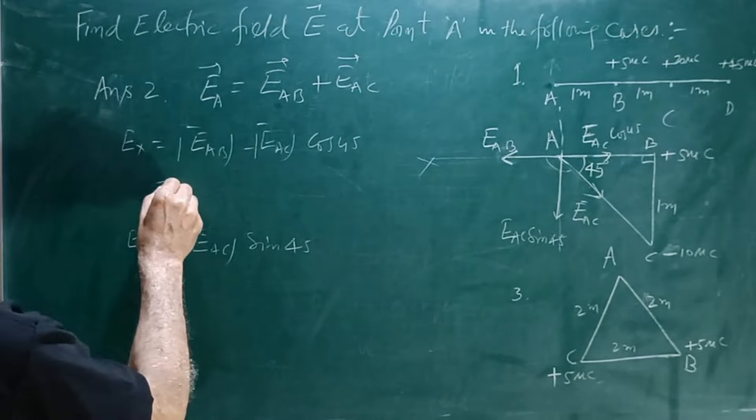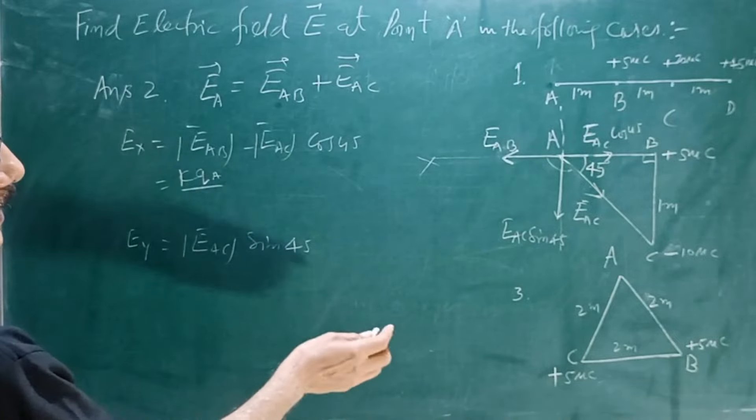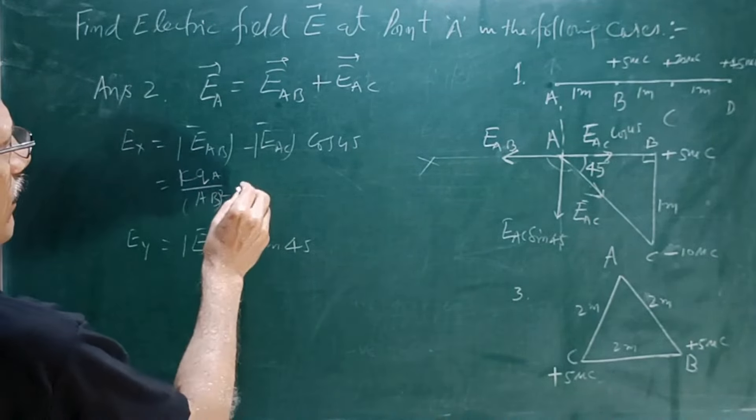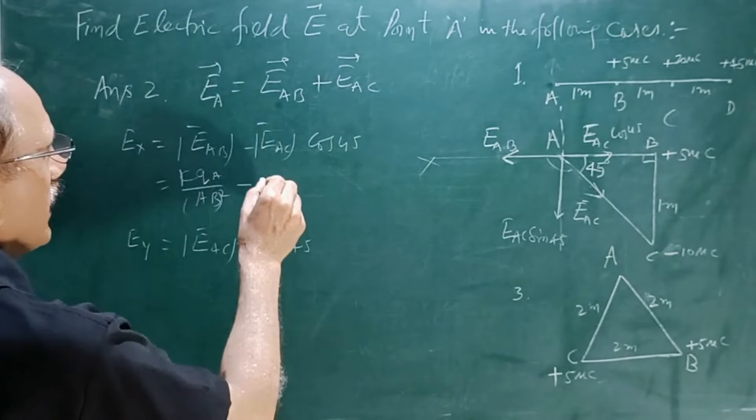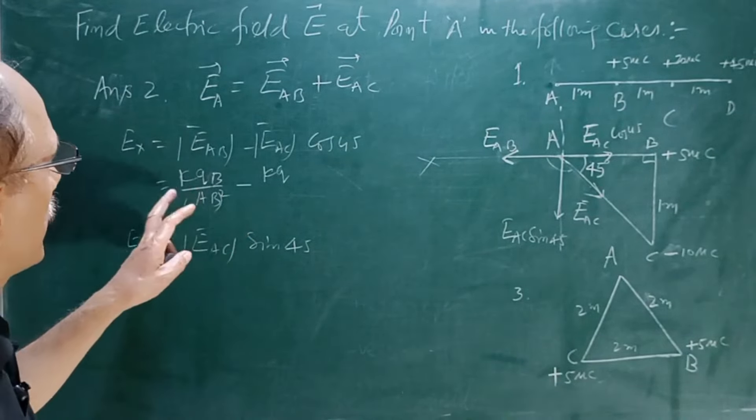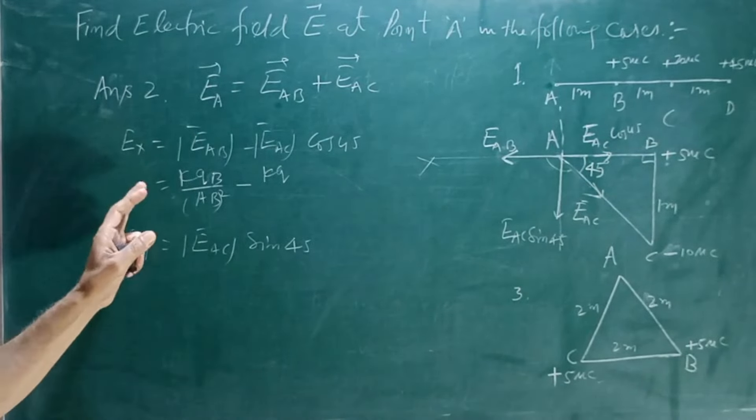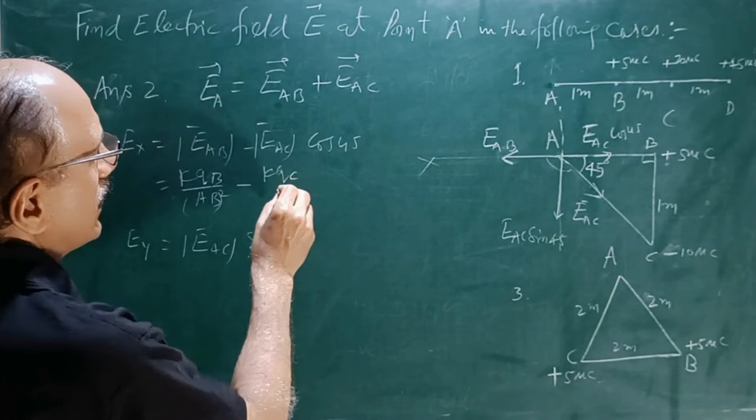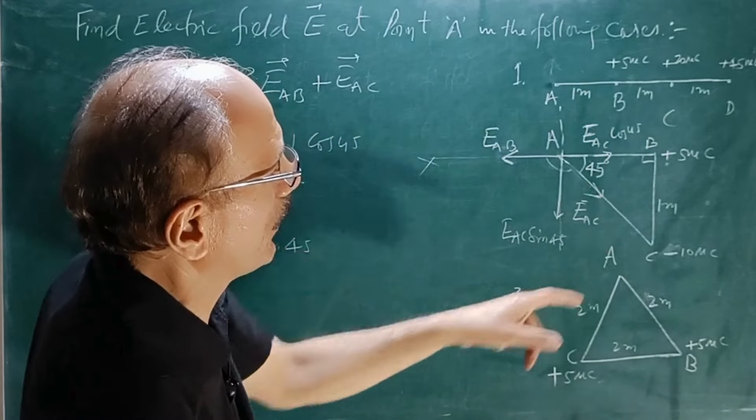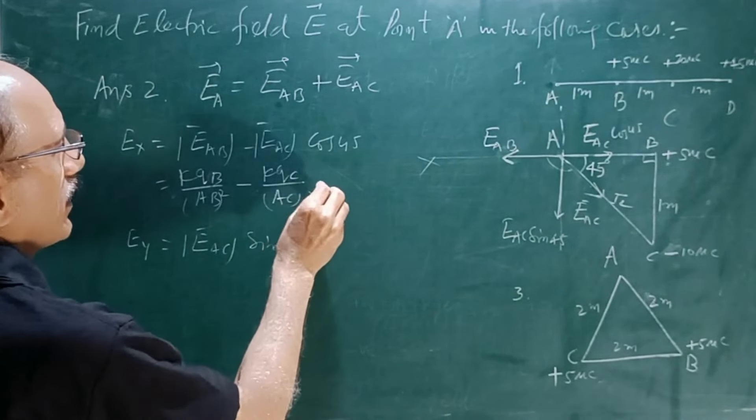EAC mod is nothing but K QB upon AB square minus EAC is K QC upon the distance. This distance is 1 and this is 1, so by Pythagoras theorem it will be root 2, and its square is AC square, cos 45. So here it will be 9 into 10 to the power 9, Q is 5 into 10 to the power minus 6.